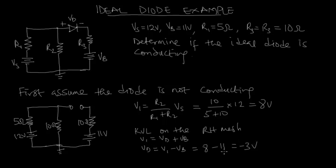So since Vd is equal to minus 3 volts, that is a negative value, it shows that the conclusion is that the diode is reversed biased. The diode is reversed biased, that is not conducting.